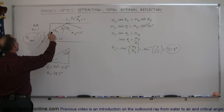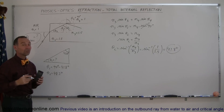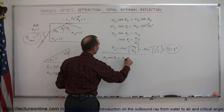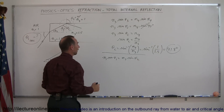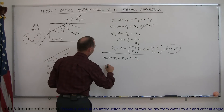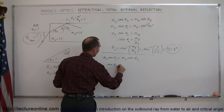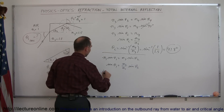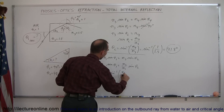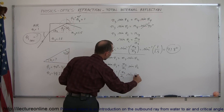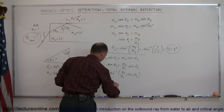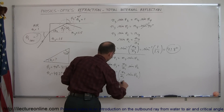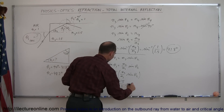Now we can figure out how large theta sub 1 can be. Again using Snell's law at the entry face: n1 times sine of theta sub 1 equals n2 times sine of theta sub 2. Solving for theta sub 1 by dividing both sides by n sub 1: sine of theta sub 1 equals n2 over n1 times sine of theta sub 2. Taking the arc sine: theta sub 1 equals arc sine of n2 over n1 times sine of theta sub 2. Plugging in numbers, n2 over n1 is 1.5 over 1, times sine of 48.2 degrees.